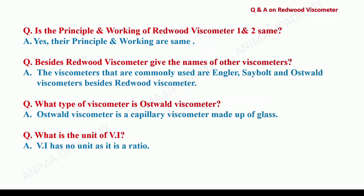Is the principle and working of Redwood Viscometer 1 and 2 same? Yes, the principle and working are the same. Besides Redwood Viscometer, other viscometers commonly used for the determination of viscosity and viscosity index are Angler, Sebald, and Oswald viscometers. Oswald viscometer is also called a capillary viscometer and it is made up of glass. What is the unit of viscosity index? Viscosity index has no units — it is a ratio.